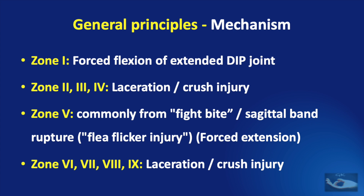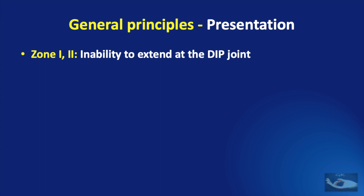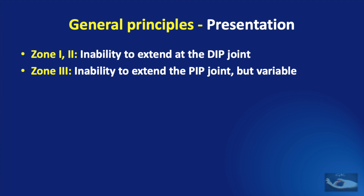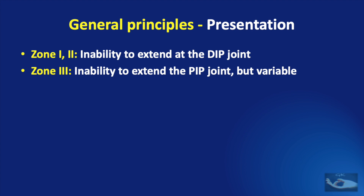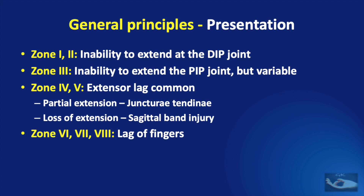Though the common feature in all these zones is injury to the extensor tendon, the mode of presentation differs. In zones 1 and 2, there is an inability to extend at the DIP joint, described as the mallet finger. In zone 3, there is an inability to extend the DIP joint, but this is variable. In zones 4 and 5, extensor lag is common and there may be partial extension because of intact juncturae tendineae, and there may be loss of extension due to a sagittal band injury. In zones 6, 7, and 8, there will be an obvious extensor lag, and in zone 9, though there is a lag of the fingers, we need to differentiate it from nerve injury that can occur at this level.